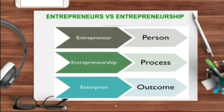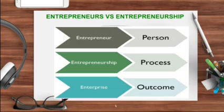Let's see the difference between entrepreneur and entrepreneurship. An entrepreneur is a person — an innovator who has managerial skills and who starts a business on his own. Entrepreneurship is the process — the process that the entrepreneur performs. The outcome of that process we call it as an enterprise, firm, or company.